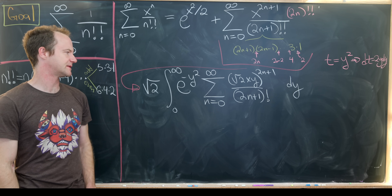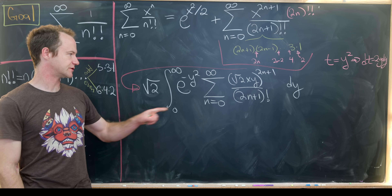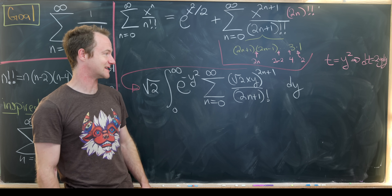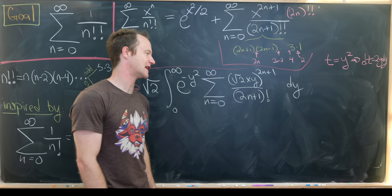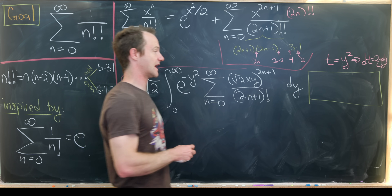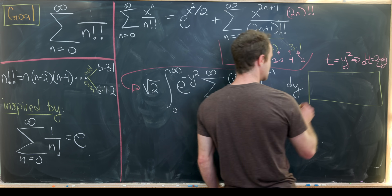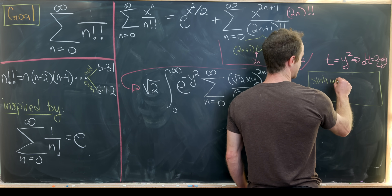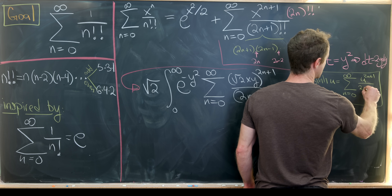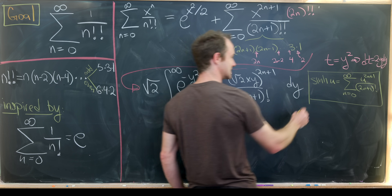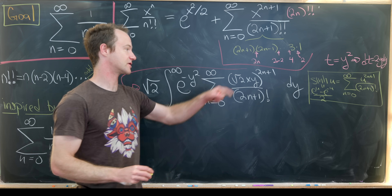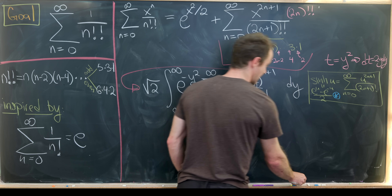After doing that simplification, we have the square root of 2 times the integral from 0 to infinity of e to the minus y squared, times the sum as n goes from 0 to infinity of the quantity square root of 2 times xy, to the 2n plus 1, over 2n plus 1 factorial. Now this sum over odd factorials is exactly the hyperbolic sine: sinh(u) equals the sum of u to the 2n plus 1 over 2n plus 1 factorial, and simultaneously equals e to the u minus e to the minus u over 2. So we replace this entire sum with that exponential form of the hyperbolic sine function.